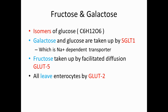Fructose and galactose are isomers of glucose, sharing the same formula: C6H12O6. Galactose and glucose are taken up into the enterocyte with the help of the SGLT1 transporter, which is a sodium-dependent transporter. Fructose is taken up into the enterocyte via facilitated diffusion with the help of the GLUT5 transporter.